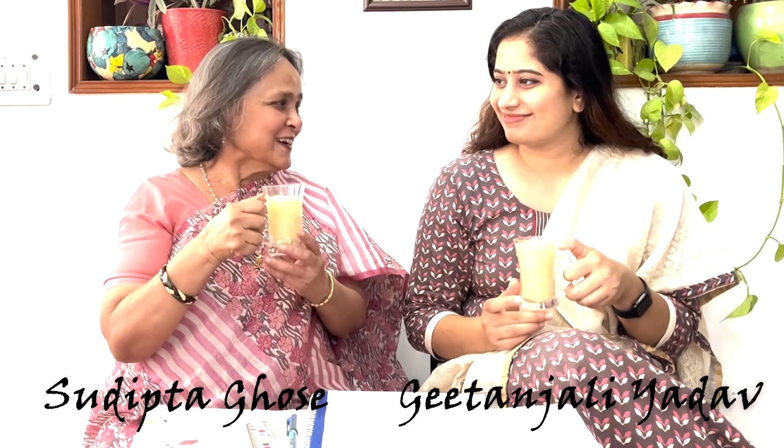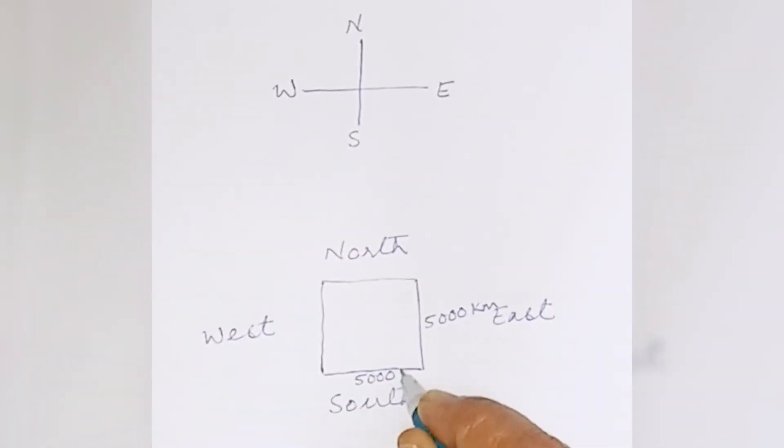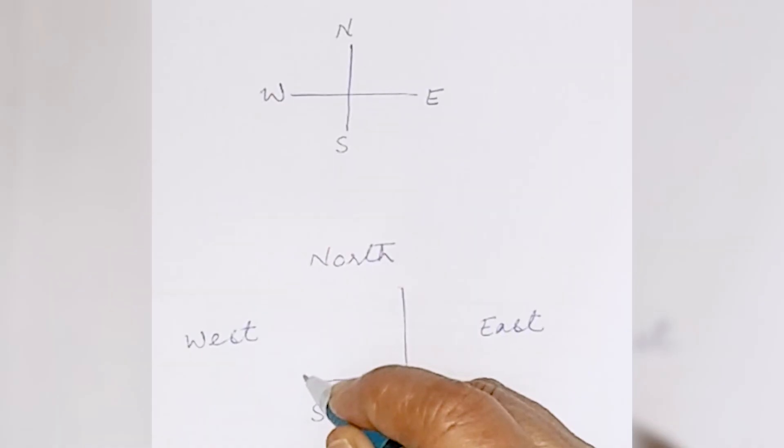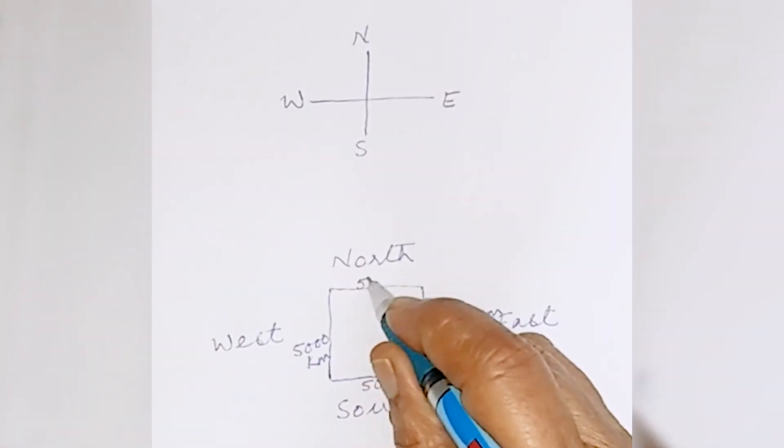I have a riddle for you today. From Oslo, there's an aeroplane that starts and goes southwards for 5000 kilometres, then goes west for 5000 kilometres, then from there goes north 5000 kilometres, then east 5000. Where does the plane reach — does it reach square one, Oslo? Well, it will reach square one if the earth wasn't moving.